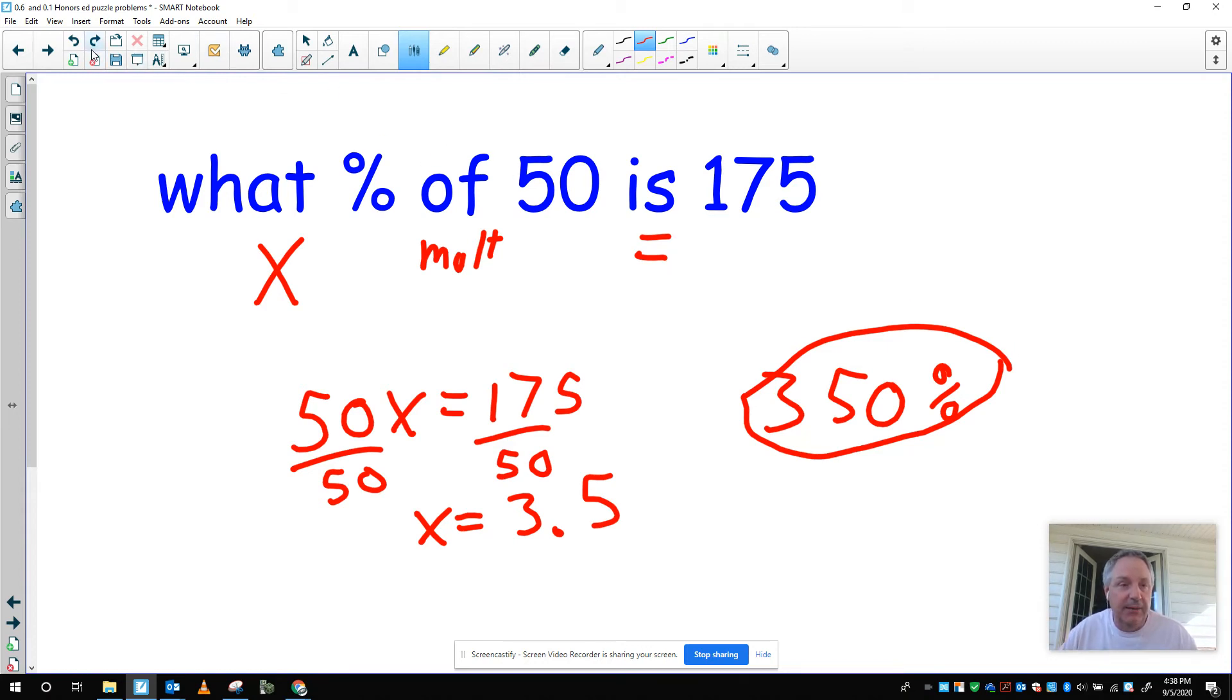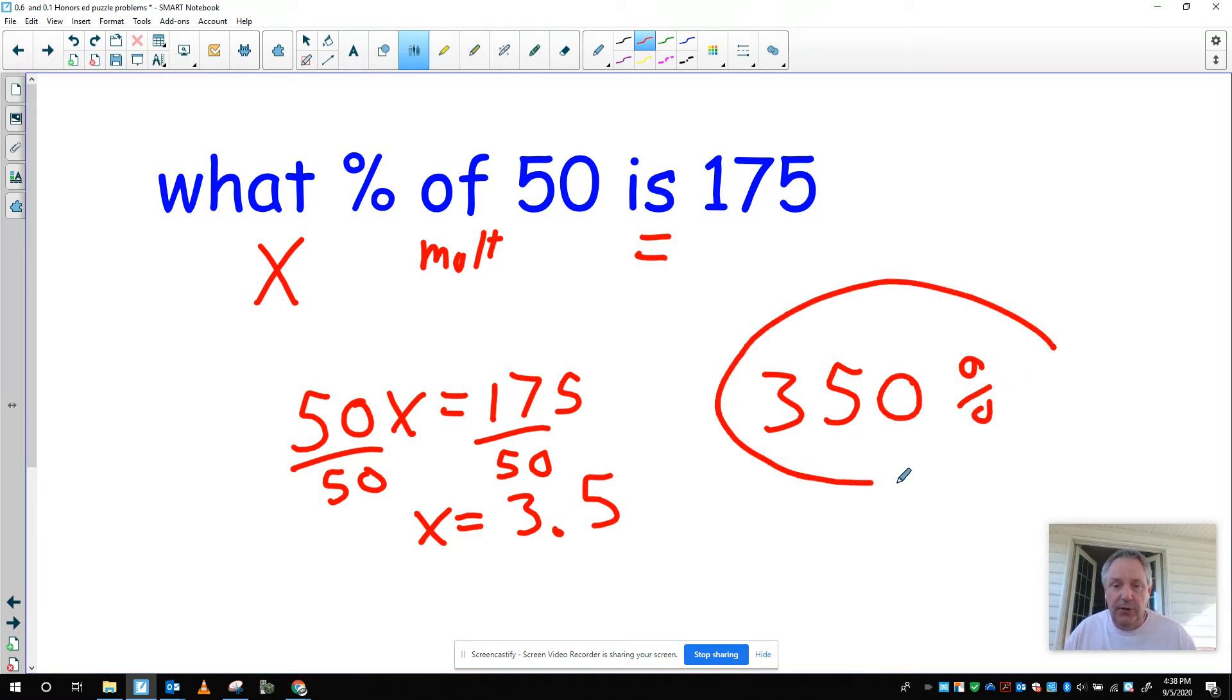Yes, 175 is a lot bigger. Let me try to circle this better here. So 350 percent. So if you double 50, that would be 100 percent. That's obviously 350 is a reasonable answer. 3.5 percent is not.